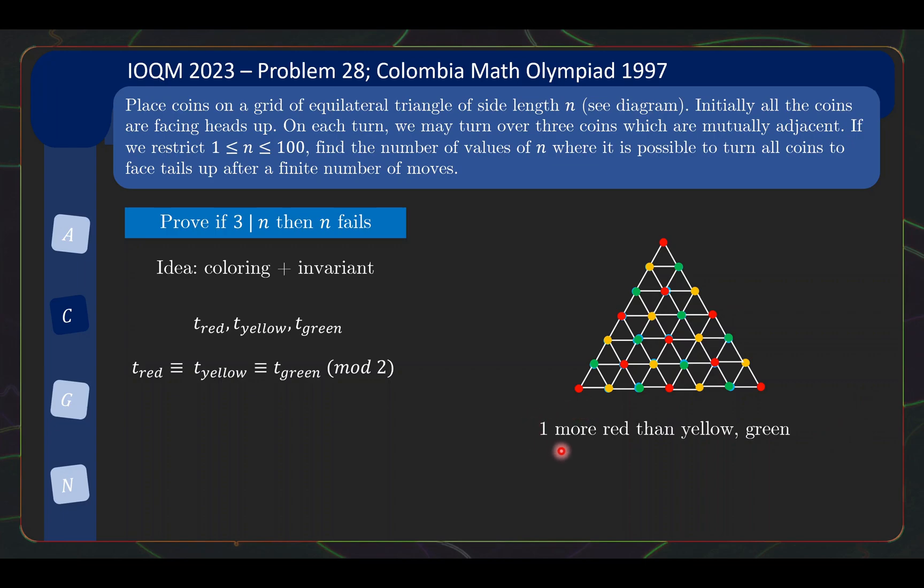But now let us look at this observation from the start. This tells us that the parity of the number of red coins is different from the parity of the number of yellow coins and green coins. And if it were the case that eventually all the coins are tails up, then we need the T values to be equal to the red values at some state. But this is not possible given that the parity equations are not the same.